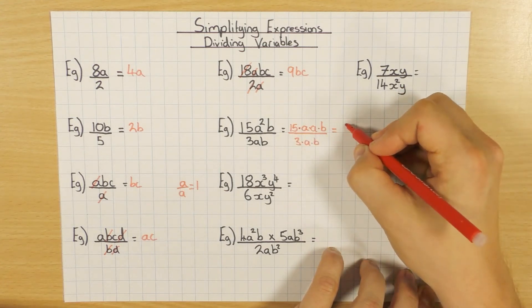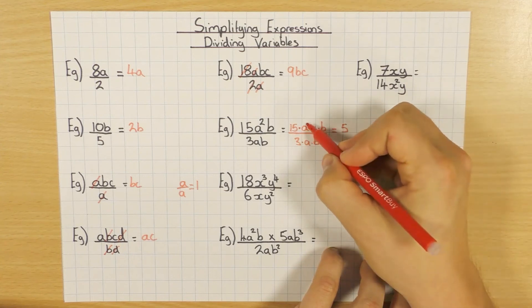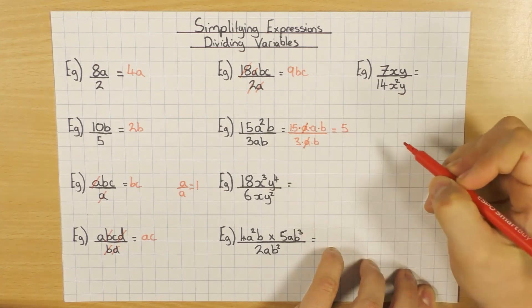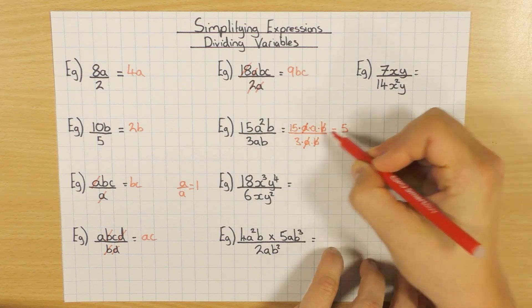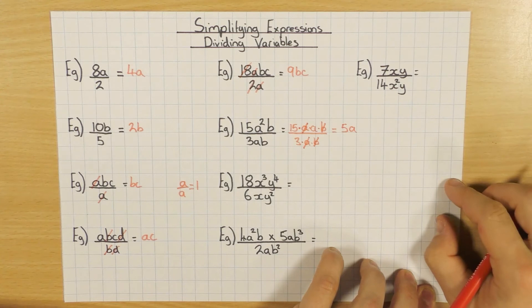15 divided by 3 is 5. I've got an a on top, a on the bottom, so I just cancel one off. And I've got a b on the bottom and a b on the top, which leaves me with just 1a on the top. So my answer there is 5a.